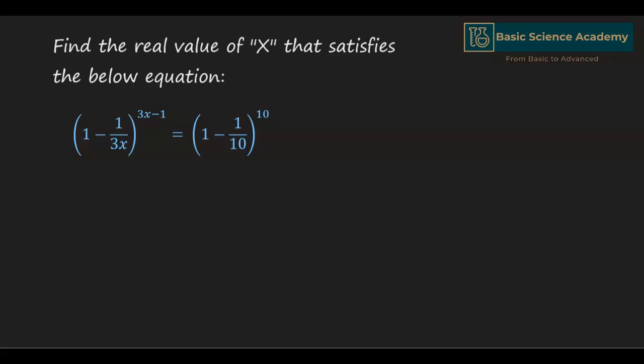In this video we are going to solve the question: find the real value of x that satisfy the equation 1 minus 1 by 3x, to the power of 3x minus 1, is equals to 1 minus 1 by 10 to the power of 10.